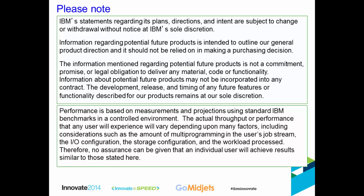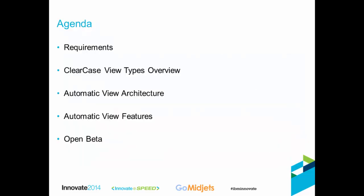Any discussion I make about performance is based on our internal configurations and cannot be extrapolated to any general purpose results. Today I'm going to talk about the requirements that drove the development of an entirely new type of view for ClearCase. Then I'll do a quick overview of the three existing view types as a reference point, go over the automatic view architecture and features, and finally give a brief discussion of the open beta. We'll have time for questions at the end.